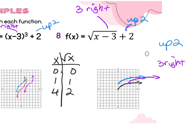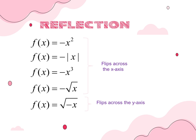Now we're going to talk about reflections across the x and the y-axis. Whenever there is a negative sign in front of the function — in front of the absolute value, x squared, x cubed, or square root — those are reflections across the x-axis. When the negative sign is under the radical or inside parentheses, that will be a flip across the y-axis.